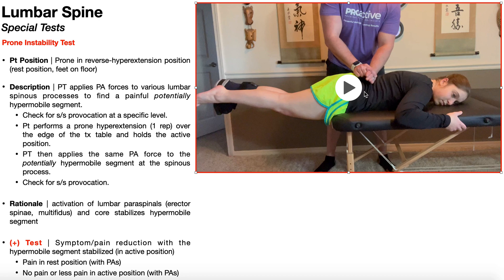The prone instability test is an easing test. A positive test is pain reduction with the hypermobile segment stabilized in the active position. In other words, there will likely be pain in the resting position with those PAs, and then no pain or less pain in the active position with the same PAs on the same hypermobile segment.